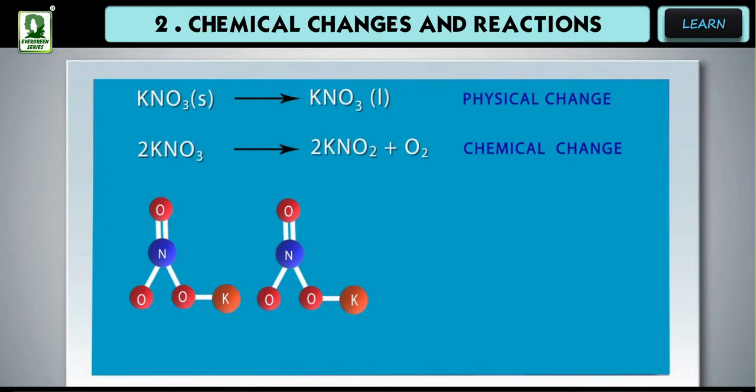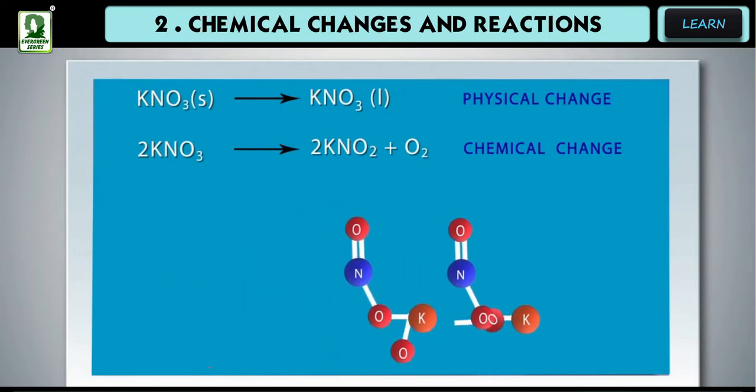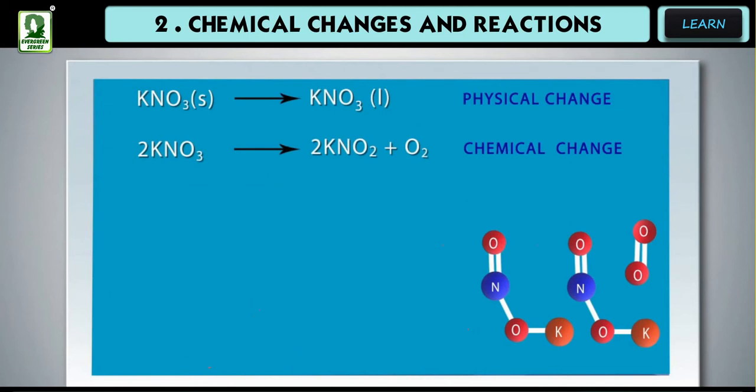When potassium nitrate is heated, it first melts, which is a physical change, and then decomposes into potassium nitrite and oxygen, which is a chemical change.